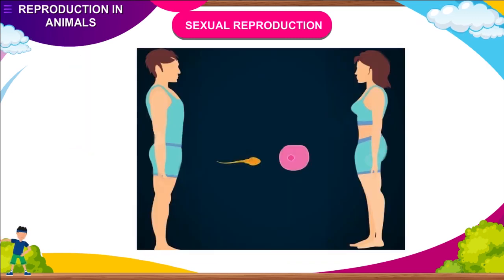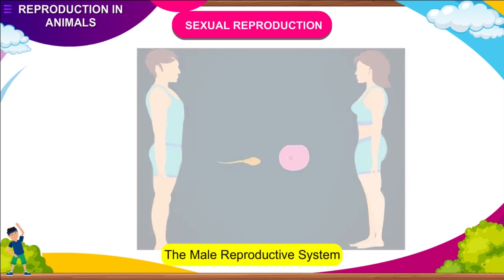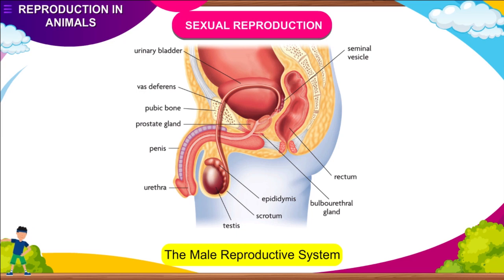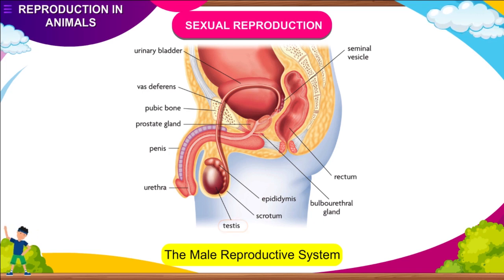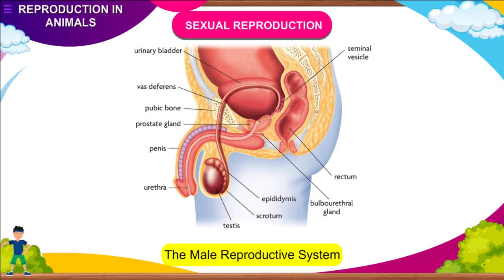Sexual Reproduction in Humans: Both the parents are involved in this type of reproduction. Male and female have different types of reproductive organs. The male reproductive system is shown below. The various parts of the male reproductive system are: Testes — each male has two testes that are oval in shape. They lie within the scrotum, which is a sac-like structure outside the abdominal cavity.